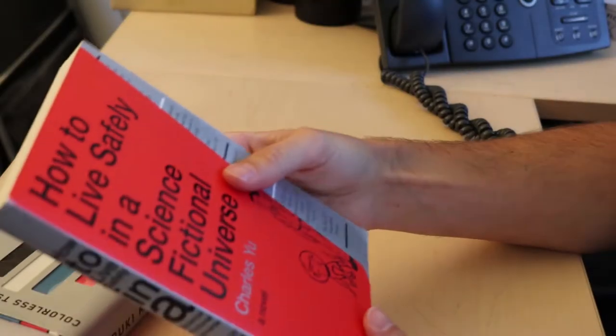Let's take this book right here. This is How to Live Safely in a Science Fictional Universe by Charles Yu. This is the paperback version and it has a couple of interesting features.